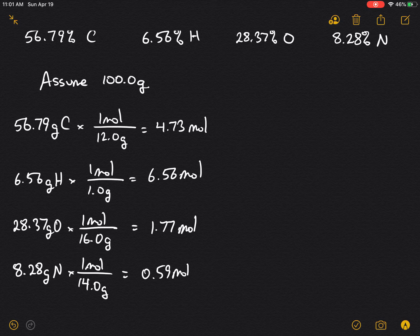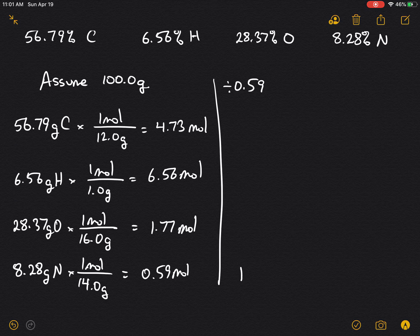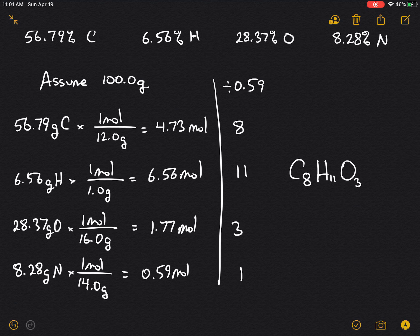We're going to divide by the smallest to get our ratio here. 0.59 gives us 1, so this gives me 3, this will be 11, this will give me 8. Therefore the empirical formula for adrenaline is C8H11O3N.